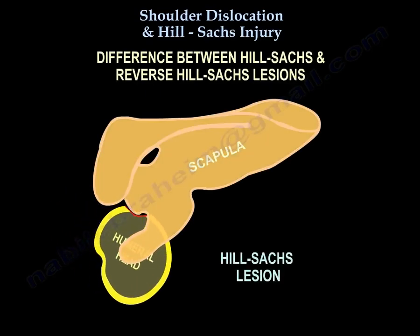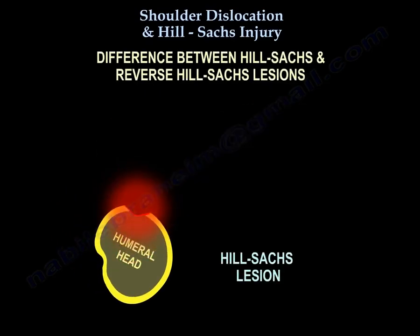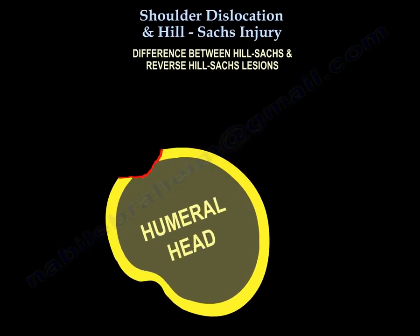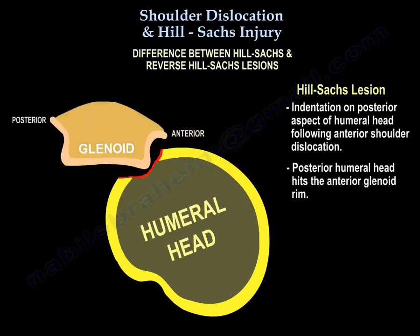What is the difference between a Hill-Sachs lesion and a reverse Hill-Sachs lesion? A Hill-Sachs lesion occurs with anterior dislocation of the shoulder — it is an indentation on the posterior aspect of the humeral head following anterior shoulder dislocation. The posterior humeral head hits the anterior glenoid rim and a fracture or indentation is created.